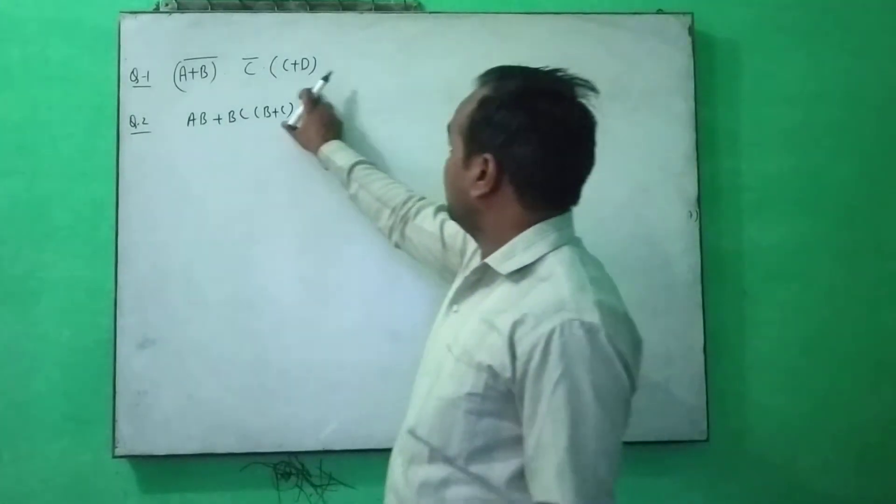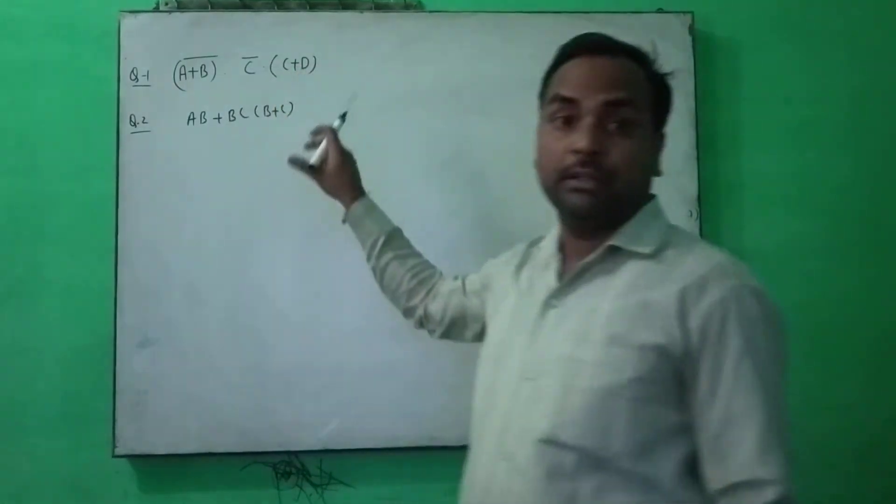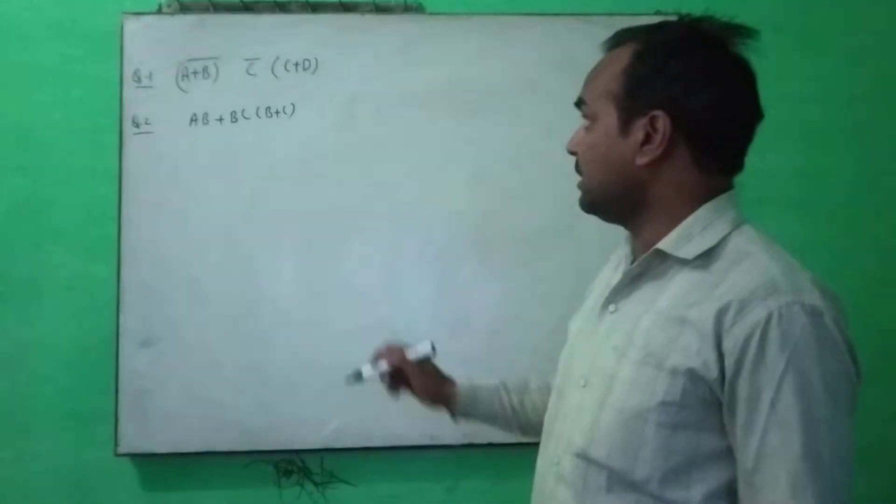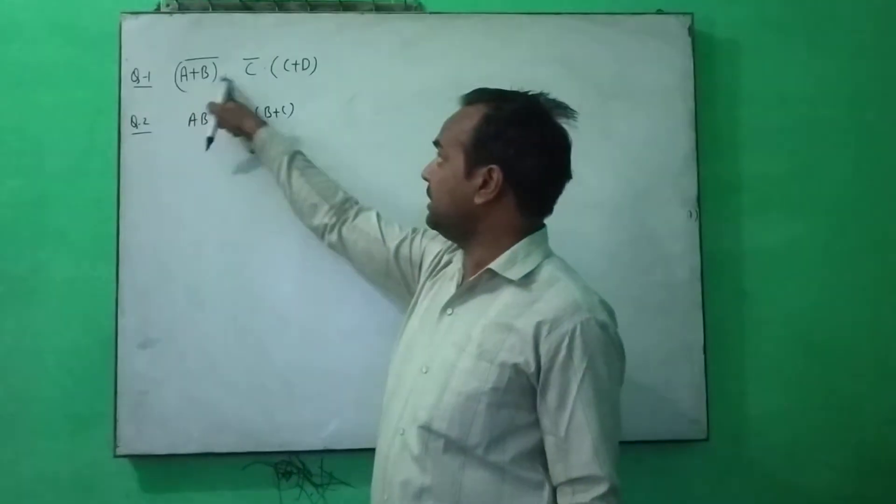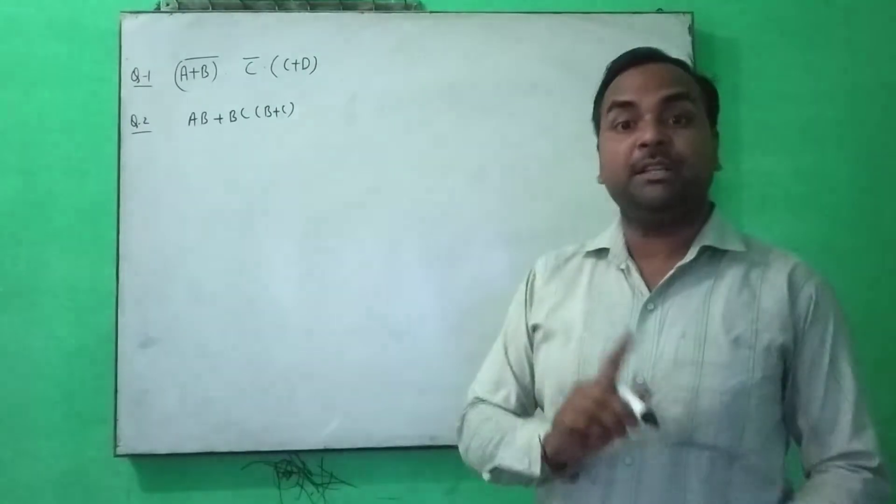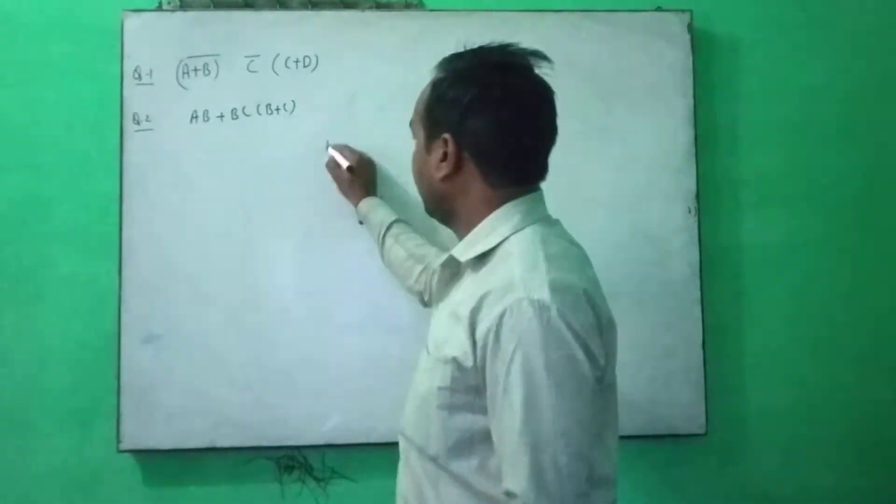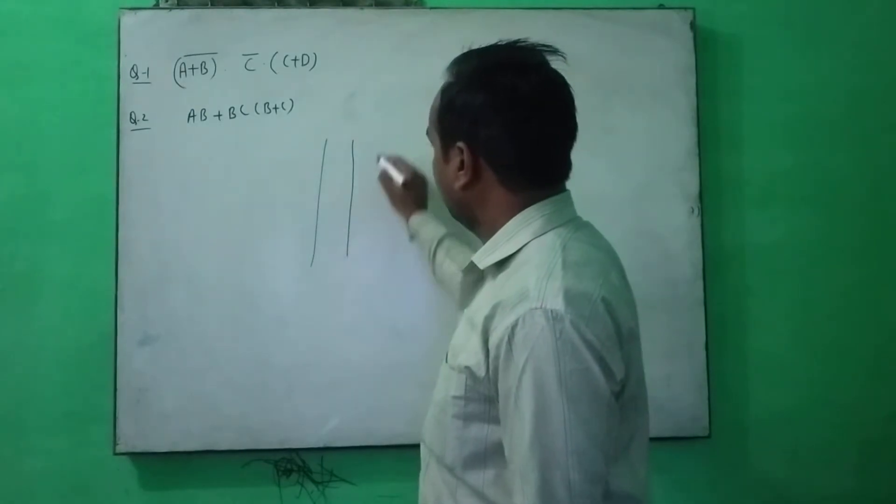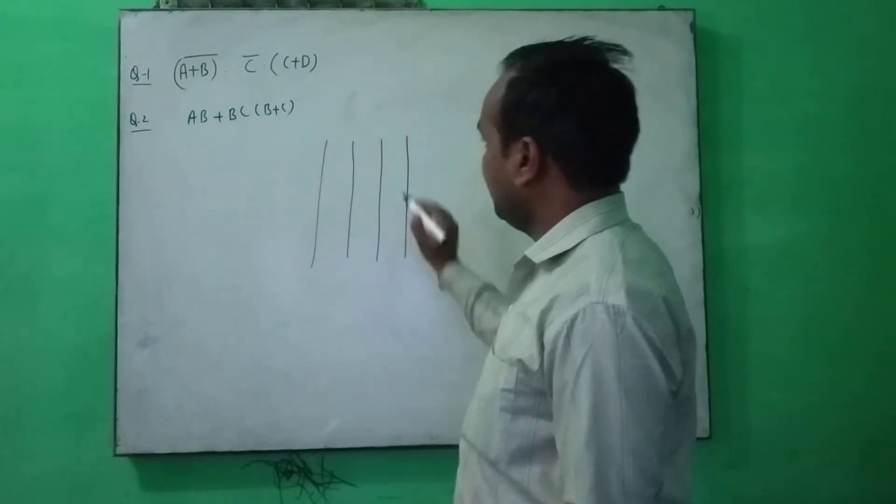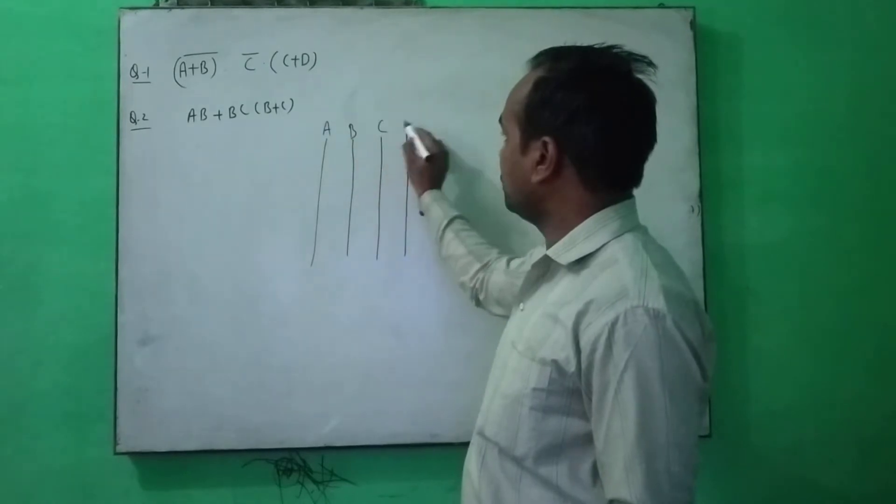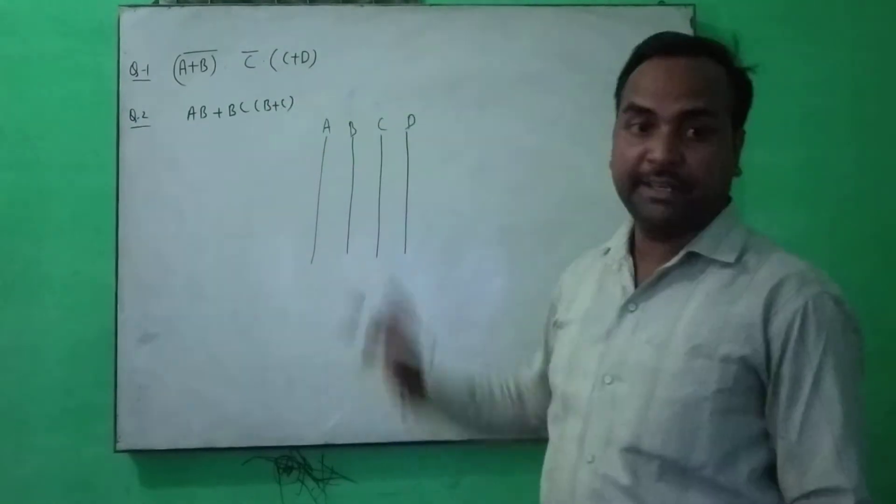How we will draw this diagram? So let me see here, we are having the 4 inputs A, B, C and D. That means you have to draw 4 input lines like A, B, C and D. You have to write here the name of inputs A, B, C and D.